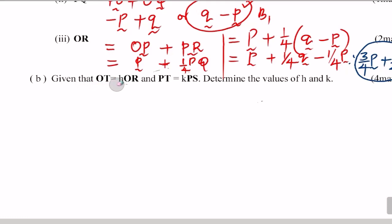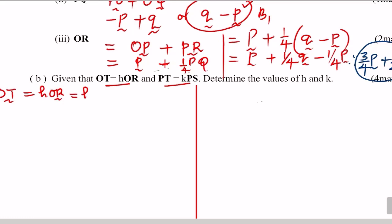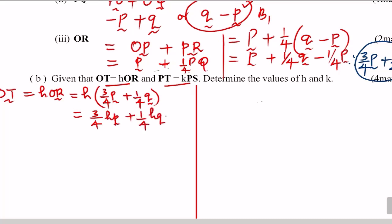Part B: given OT equals hOR and PT equals kPS, determine h and k. To find h and k, we express OT in two ways — the first way using hOR, the second using kPS — then form two simultaneous equations. In the first way, OT equals hOR equals h times (3/4 p plus 1/4 q), which gives 3/4 hp plus 1/4 hq.